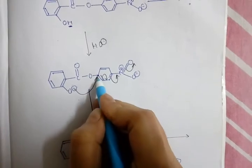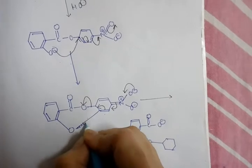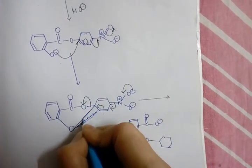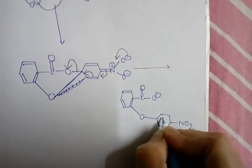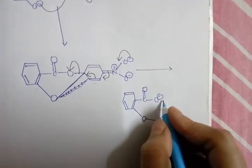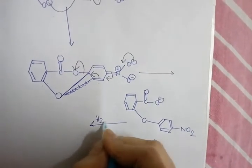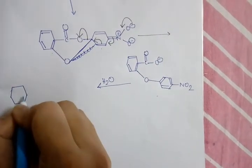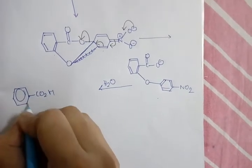Here O negative will attack this position which is para to NO2 group. So new bond will form with para to NO2 group and between this oxygen and NO2 group will be in para position. This bond will break and CO2 negative will form. By treating this with H2O, this will form NO2 HO.